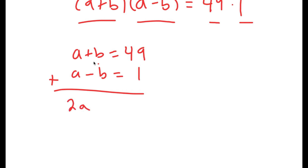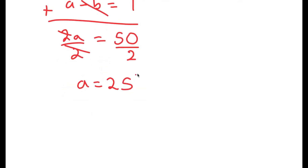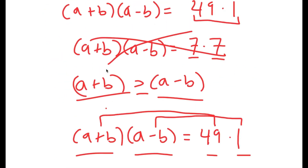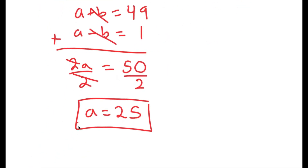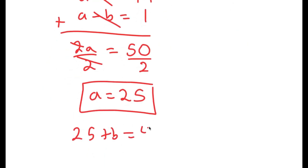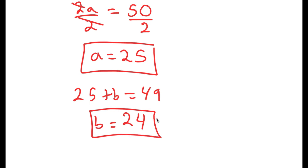a plus a is 2a, b and negative b cancel out, and 49 plus 1 is 50. So I get that 2a is equal to 50, and if I divide both sides by 2, I get a is equal to 25. Now that we know a is 25, and a plus b equals 49, that means 25 plus b equals 49, so b equals 49 minus 25, which is 24. So a equals 25 and b equals 24.